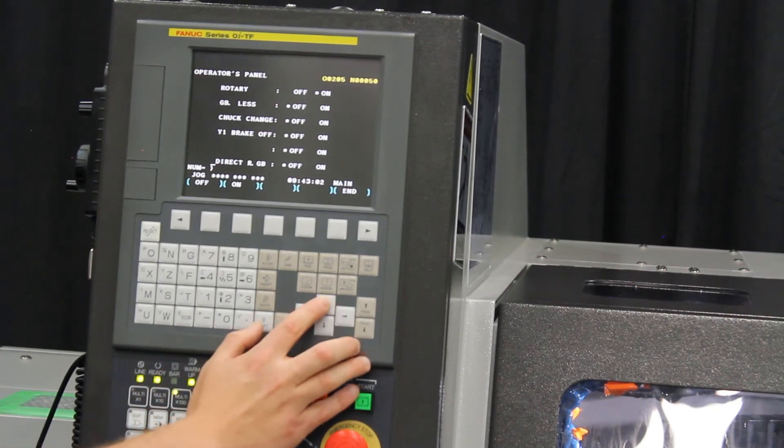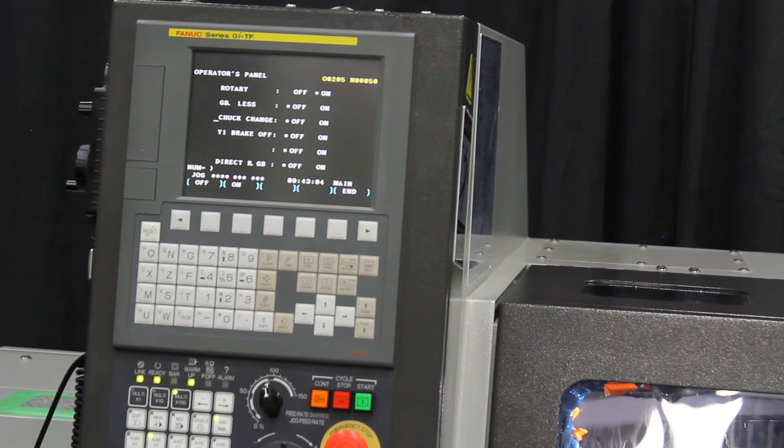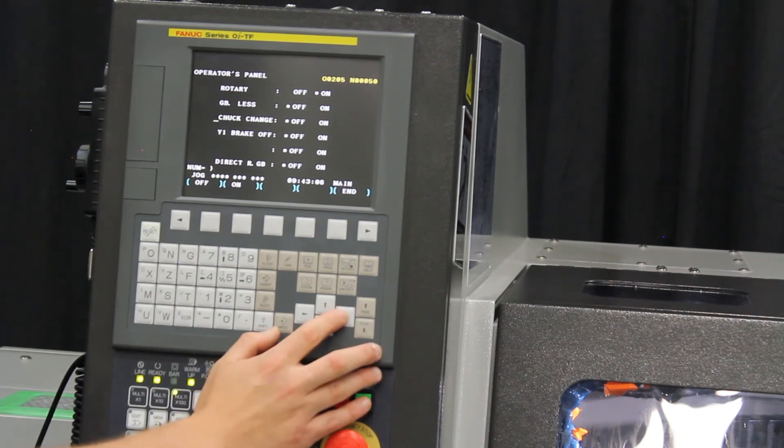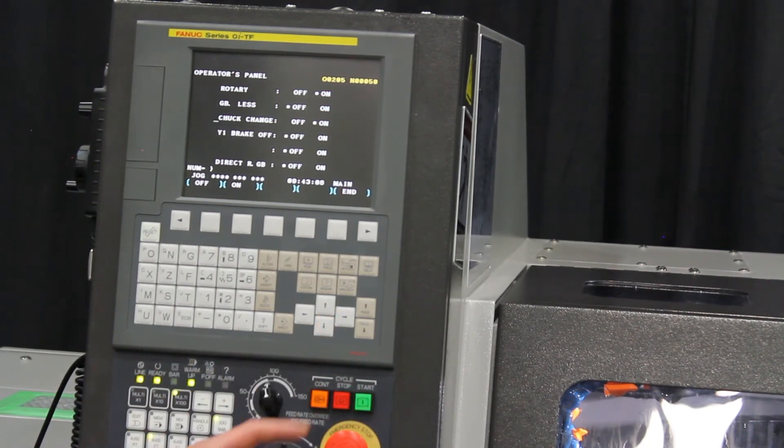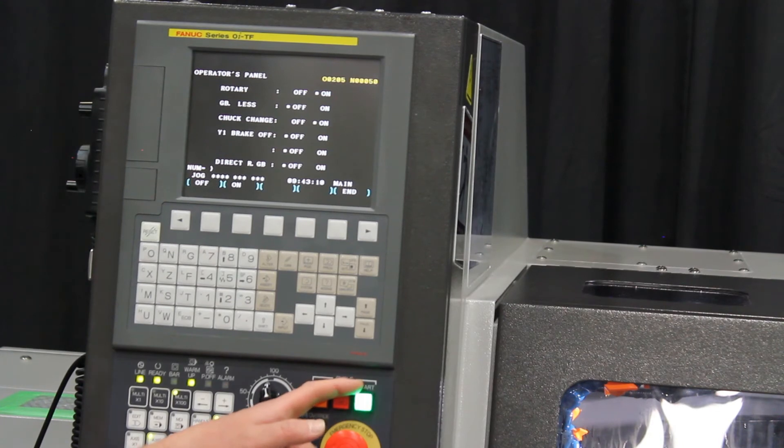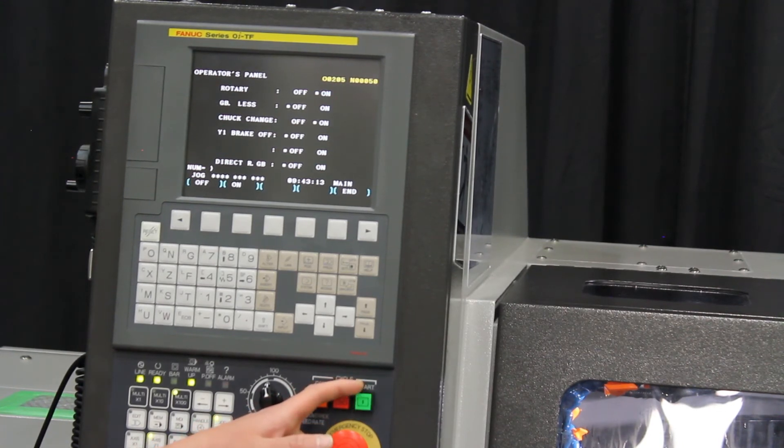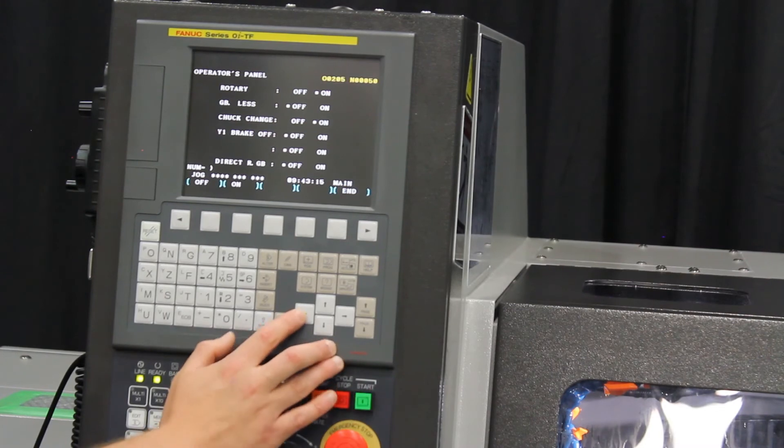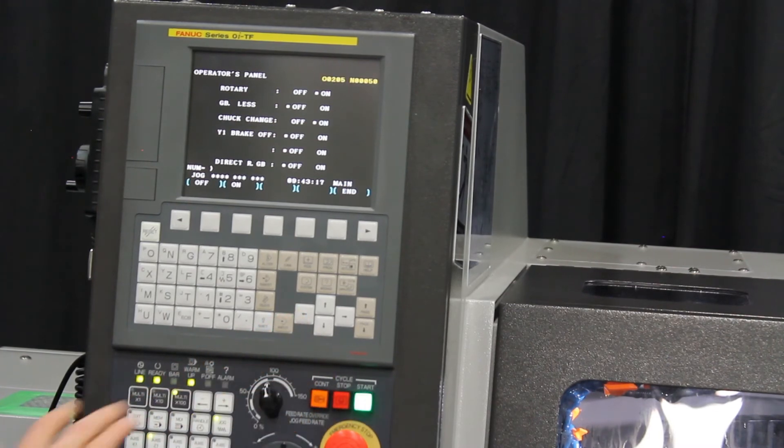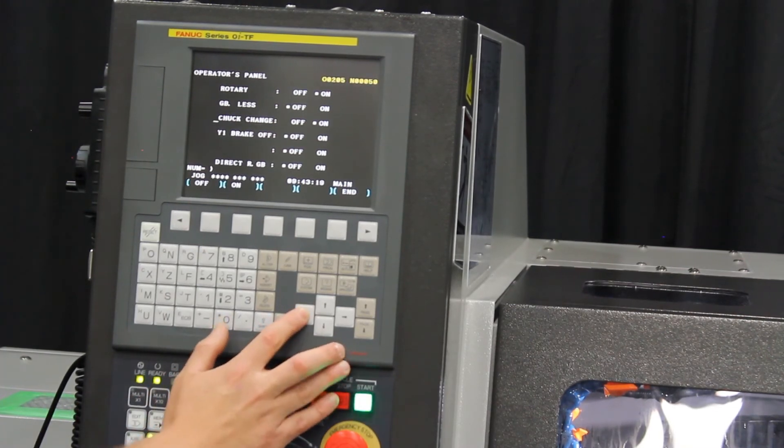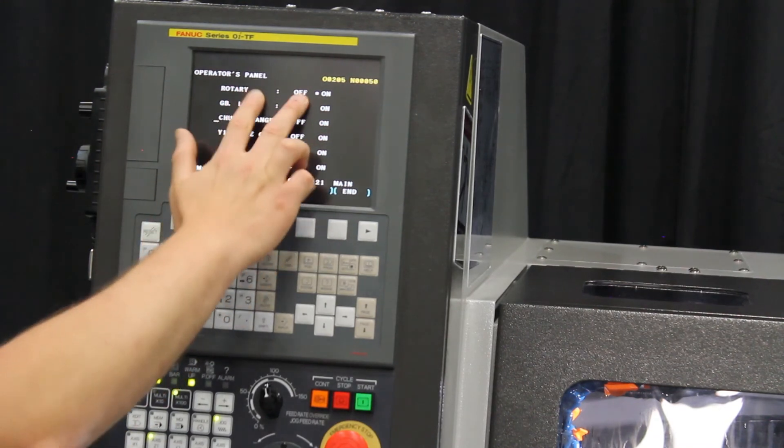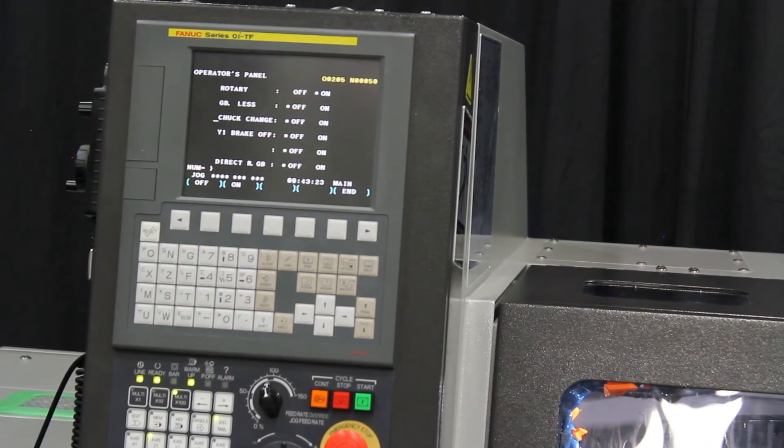If you want to move back farther always feel free to go into chuck change. When you go into chuck change you will see that the start button is going to flash and it is not going to allow for anybody to hit cycle start. Whenever you are completely done and you have installed the unit you can finally move everything back to the proper unit. Rotary guide bushing.